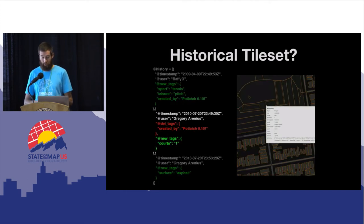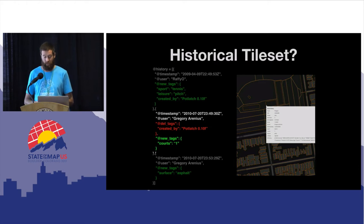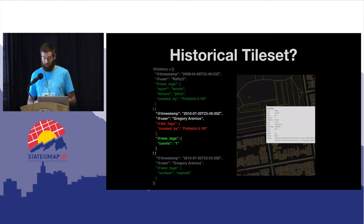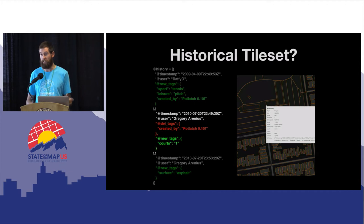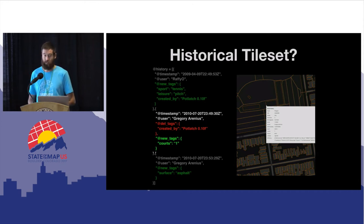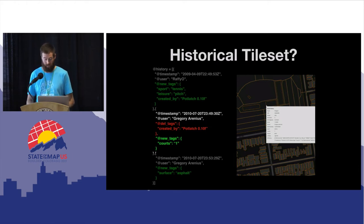Here's another example of tag history — a tennis court in San Francisco. In a highlighted edit in April 2010, the tag describing the number of courts was added and then the tag created by Potlatch was deleted from the object itself. These historical tile sets track new, deleted, and modified tags across all previous versions of objects.